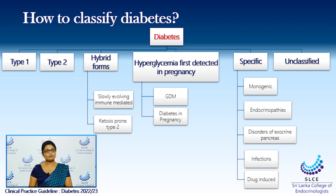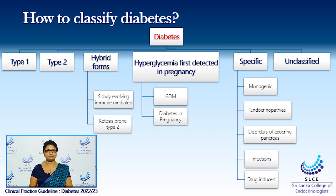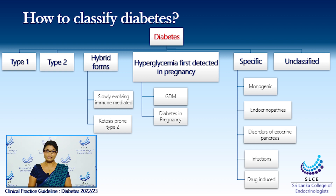Hybrid forms are also commonly seen now. There are two types: the slowly evolving immune-mediated diabetes, as well as the ketosis-prone type 2 diabetes. Hyperglycemia first detected in pregnancy are also of two varieties: gestational diabetes mellitus and also diabetes in pregnancy.